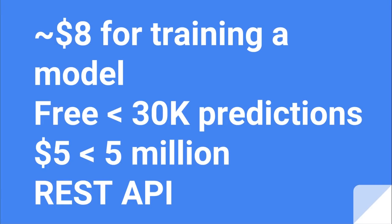AutoML was considered both cheap and inexpensive by the team. The cost was $8 to train a model, which is a bit on the pricey side. As Claudio pointed out, the pricing was not very transparent. Google Cloud provides preemptive instances that are up to 70% cheaper than regular instances. It would be nice to provide this option for developers who are not under a tight deadline and just testing out AutoML.